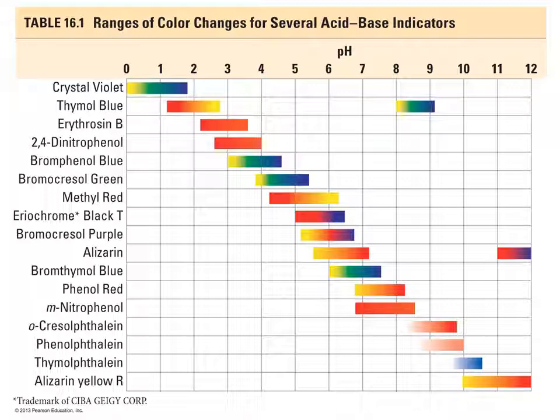You see here that you have a range of different indicators that are available. And different indicators have different color changes. So crystal violet changes color between pH 0 to 2, bromophenol blue between pH 3 and 5, and so on and so forth.